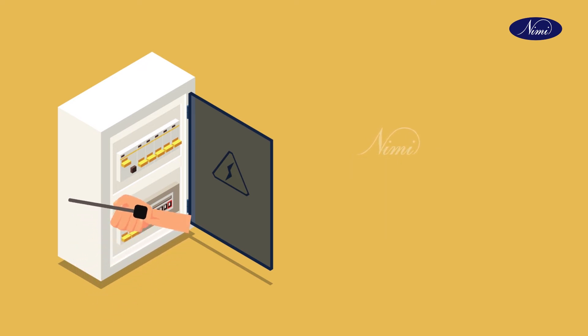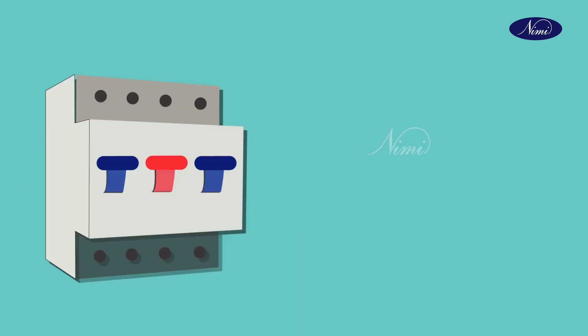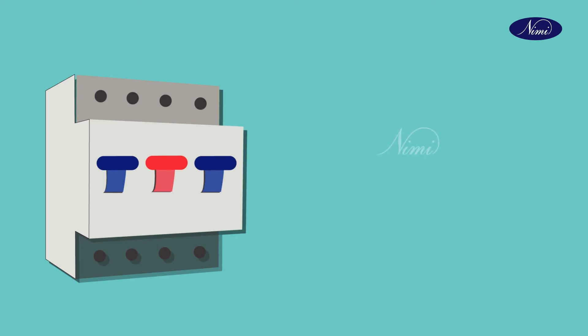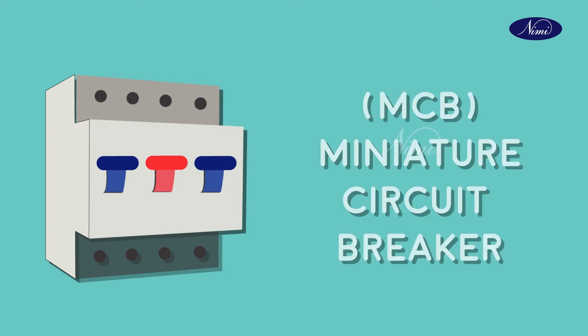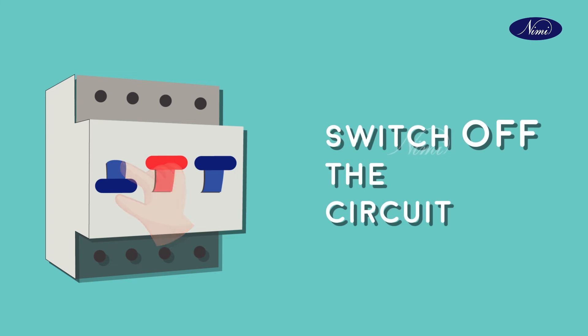In case of MCB switches, the knob is operated. The knob of the MCB — miniature circuit breaker — should be pushed down to switch off the circuits. And when it is pushed up, the switch comes to on condition.